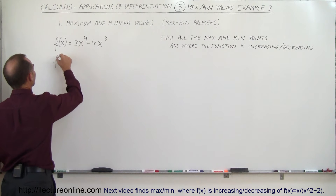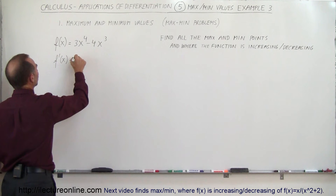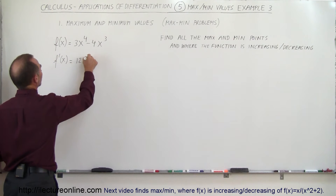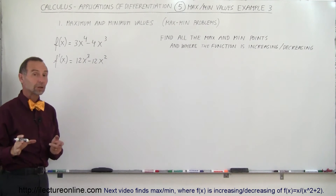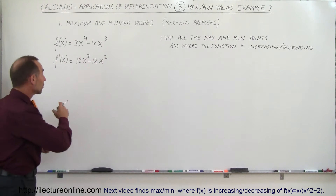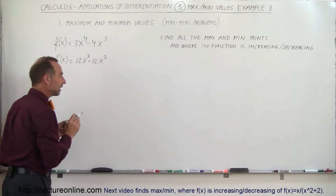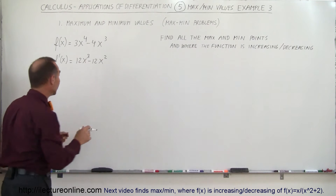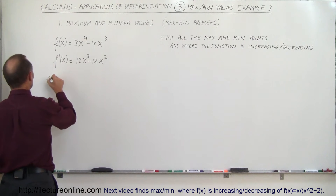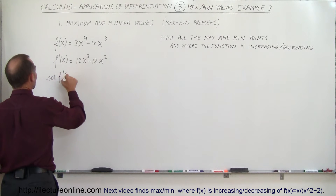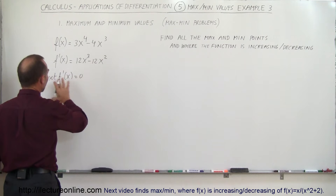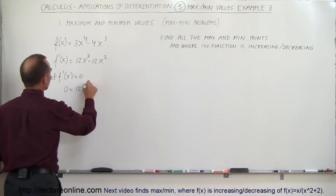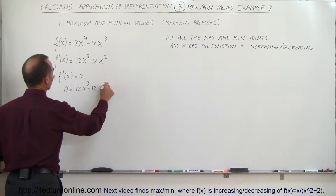So f prime of x is equal to 12x cubed minus 12x squared. Now to find those critical points, we set the derivative equal to zero because we want to find out where the slope is equal to zero. So we set f prime of x equal to zero: zero equals 12x cubed minus 12x squared.